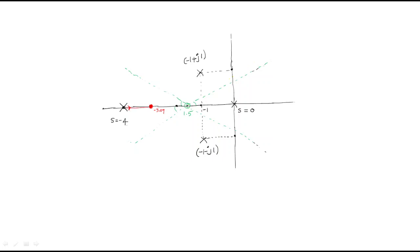With the breakaway point at approximately minus 3.09, the root locus between s = 0 and s = minus 4 breaks away at this point. The root locus from the real axis poles enters from both ends and departs from the breakaway point, following the asymptotes outward.